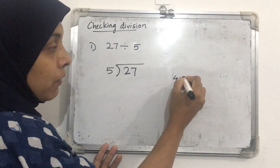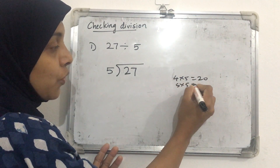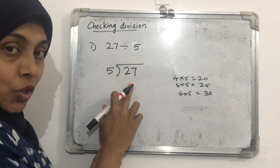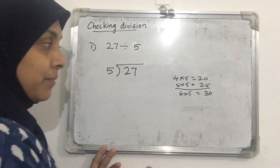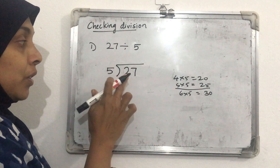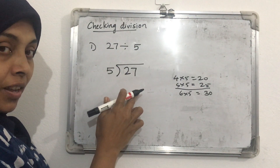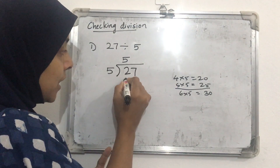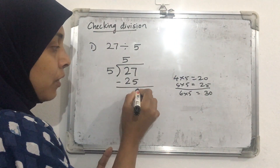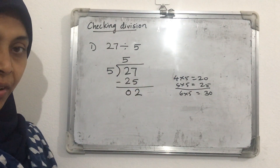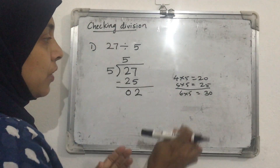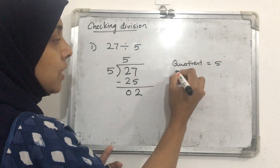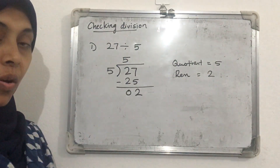Continuing the table of 5: 4 into 5 is 20, 5 into 5 is 25, and 6 into 5 is 30. Since 30 is greater than 27, we take 5 as our multiplication factor — giving us 25. We write 5 in the quotient. Then 5 into 5 is 25; subtracting: 27 minus 25 gives remainder 2. So the quotient is 5 and the remainder is 2.